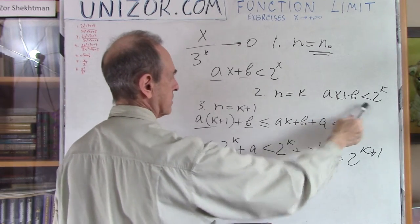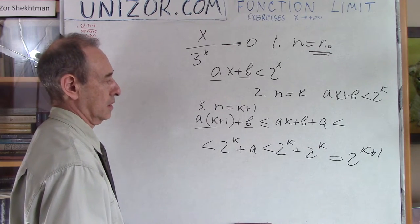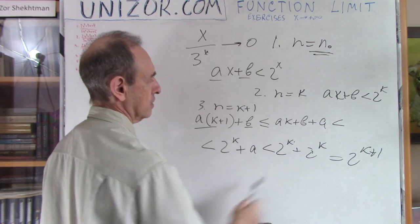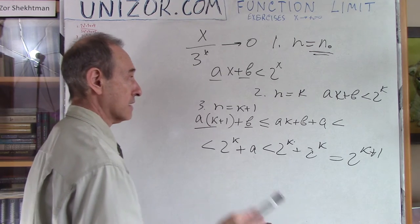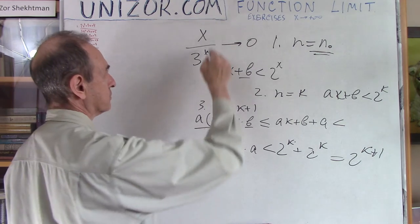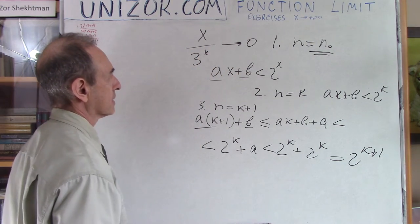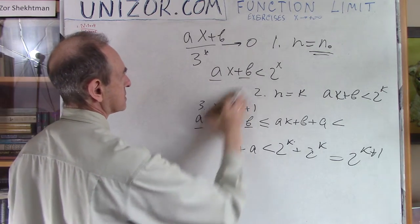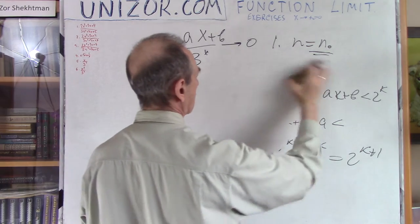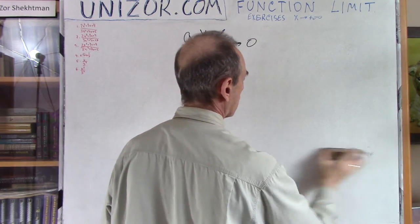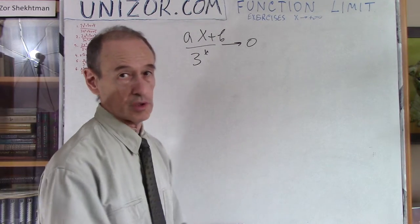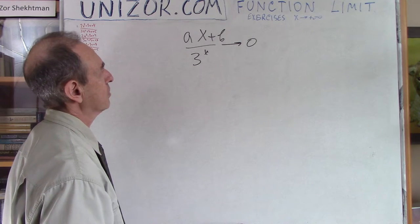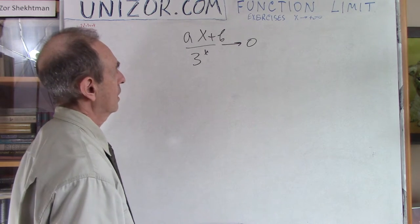So not only x/3^x but also (ax + b)/3^x goes to zero for any linear numerator, because the numerator is eventually less than 2^x, so (ax+b)/3^x < (2/3)^x → 0. So any linear function divided by 3^x is an infinitely small variable as x → ∞.